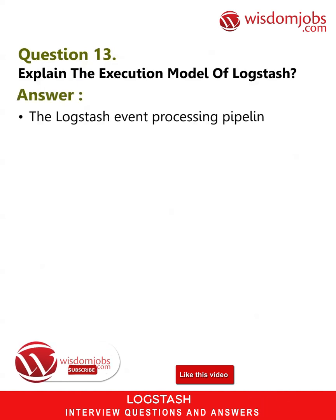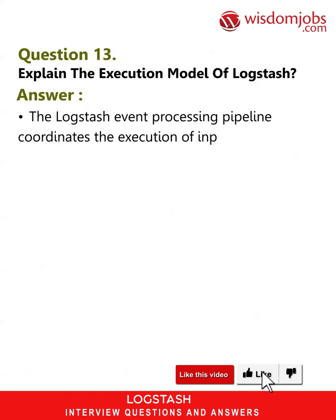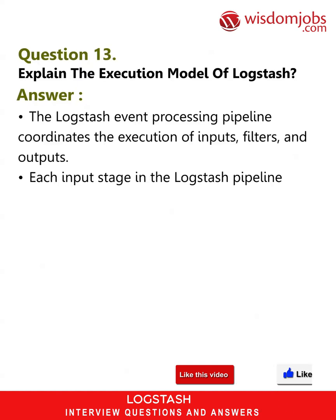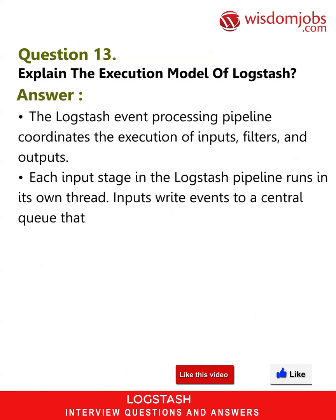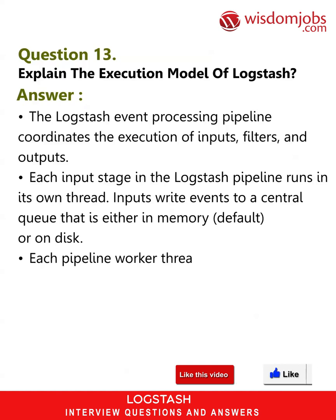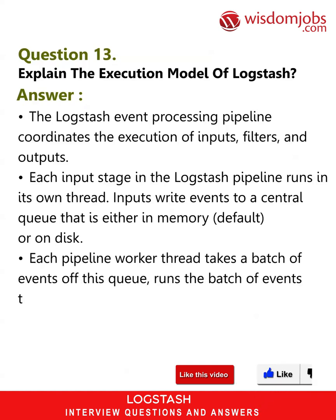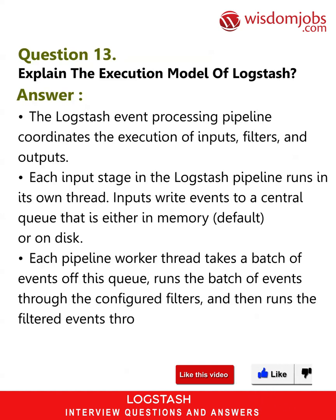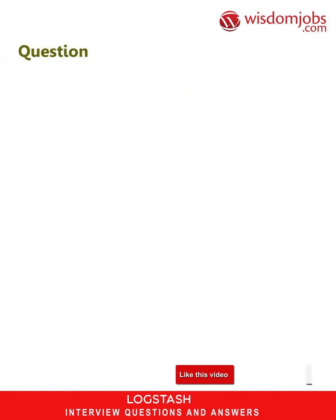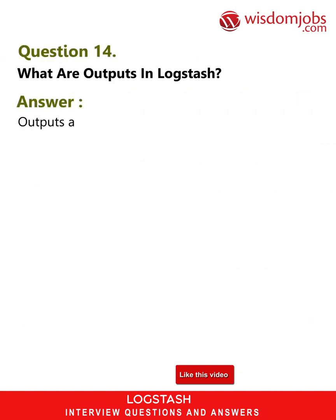Question 13: Explain the execution model of Logstash. Answer: The Logstash event processing pipeline coordinates the execution of inputs, filters, and outputs. Each input stage in the Logstash pipeline runs in its own thread. Inputs write events to a central queue that is either in memory (default) or on disk. Each pipeline worker thread takes a batch of events off this queue, runs the batch through the configured filters, and then runs the filtered events through any outputs.